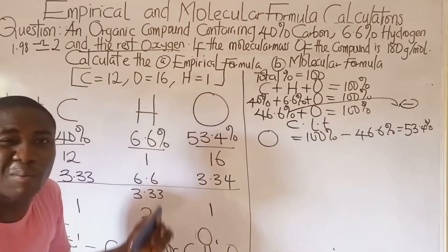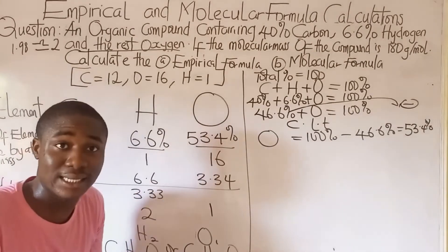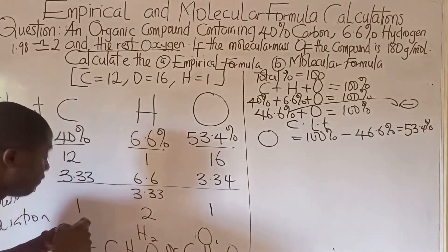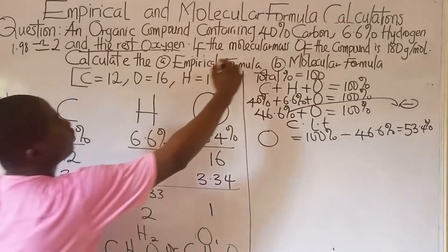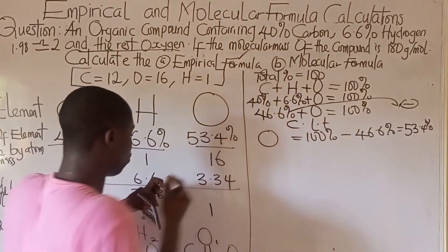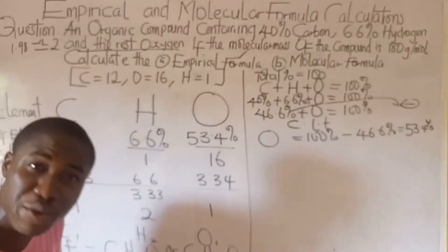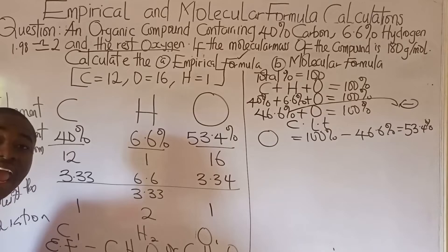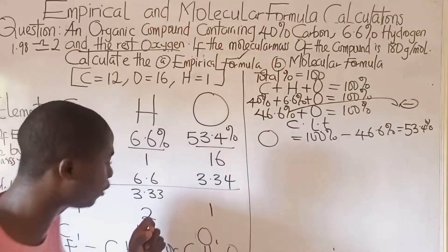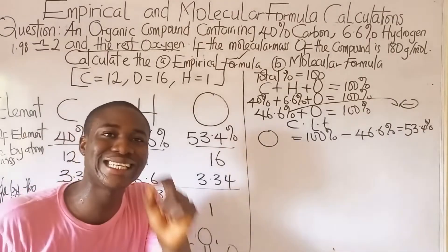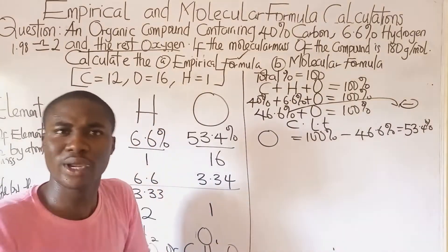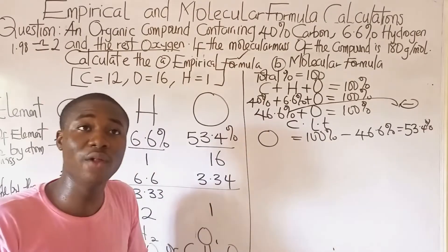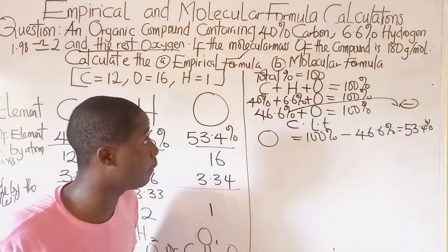The empirical formula of the compound is C₁H₂O₁, or simply CH₂O, because a subscript of 1 is negligible. We have now solved for the empirical formula — the empirical formula of the compound is CH₂O.